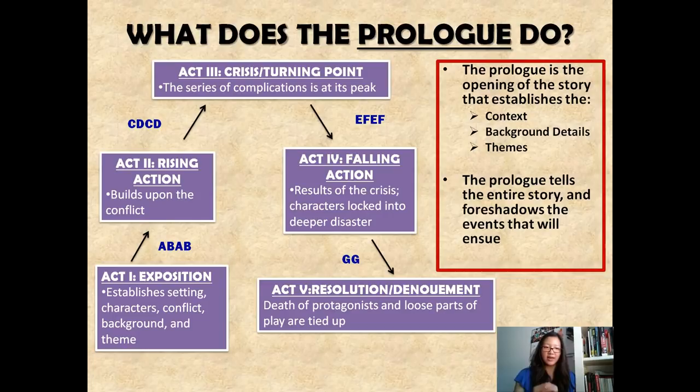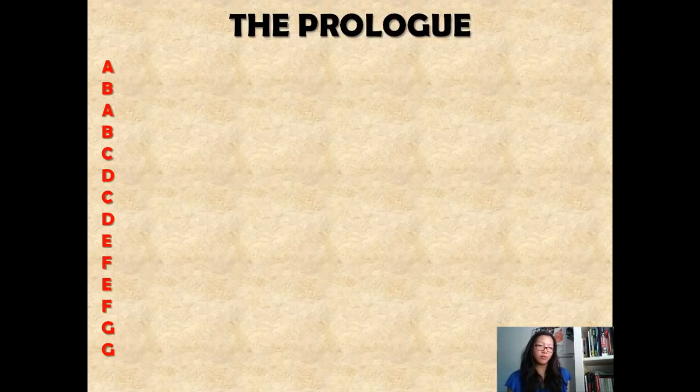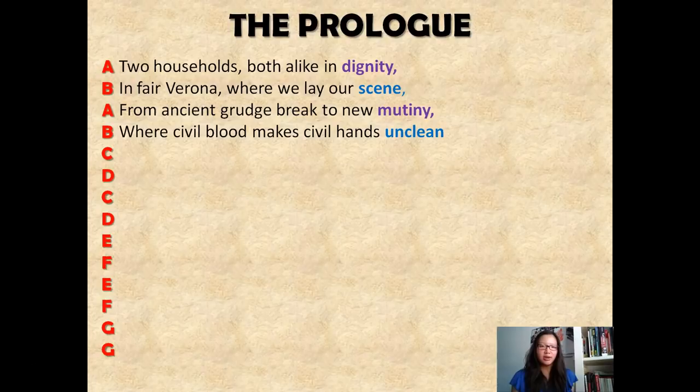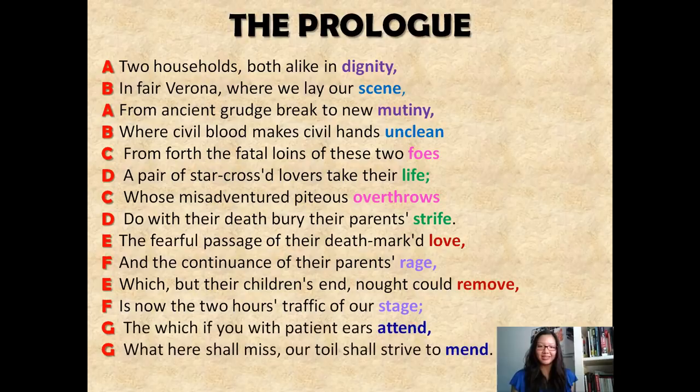We're going to take a look at the prologue itself, which consists of 14 lines. The specific rhyme structure is ABAB, CDCD, EFEF, and GG. Dividing it into stanzas, we have stanza one — the first quatrain — the second quatrain, the third quatrain, and then the rhyming couplet at the end. Let's take a look at how each of these work throughout the prologue of Romeo and Juliet.